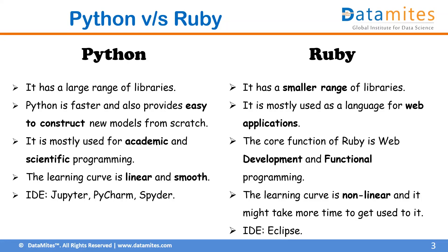Ruby is mostly oriented towards web application development. Python, being a general-purpose programming language, provides object-oriented as well as functional programming, meaning programmers can build their own functionalities from scratch and construct new models — that level of flexibility is provided by Python. The core function of Ruby is web development and functional programming, mainly focusing on the web application department.